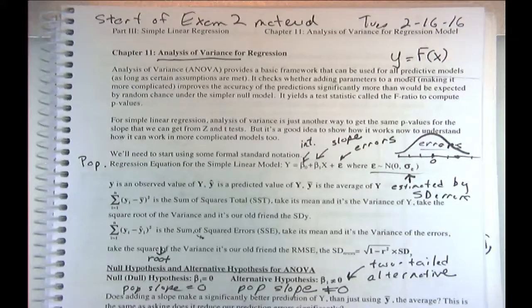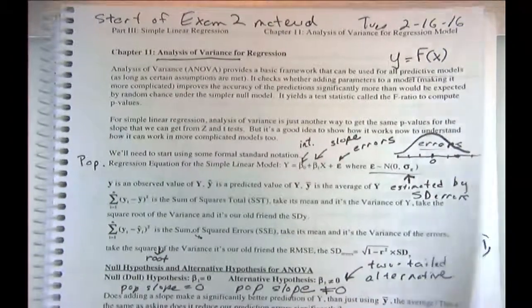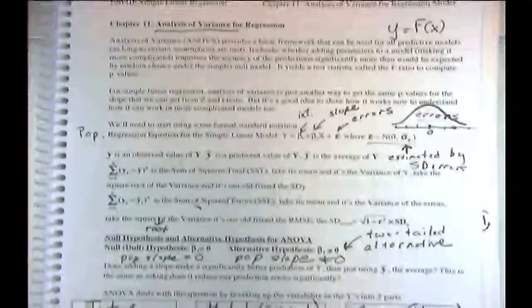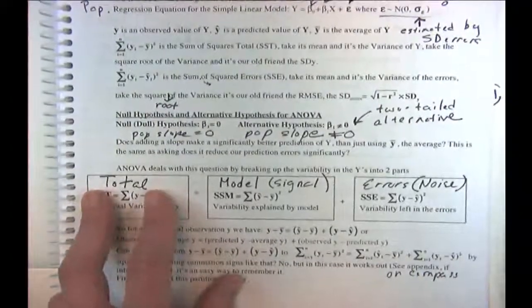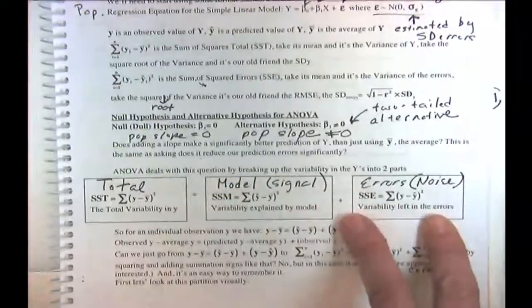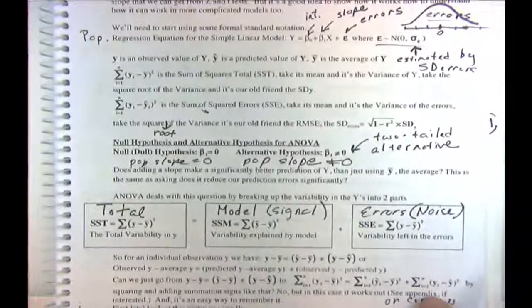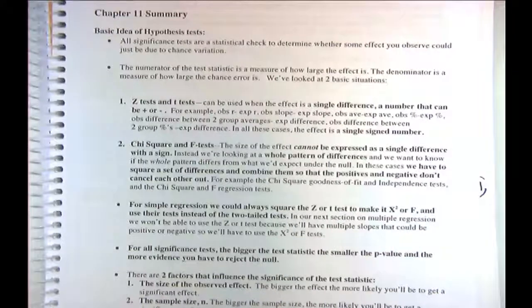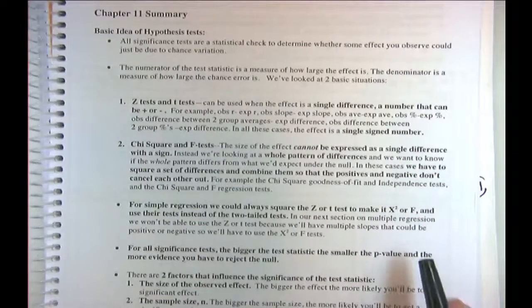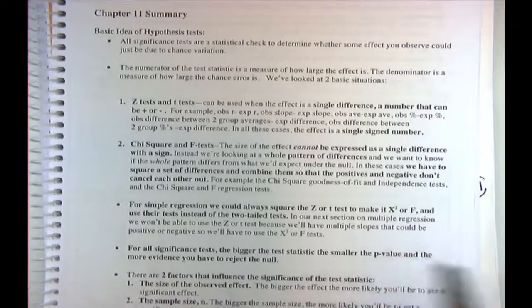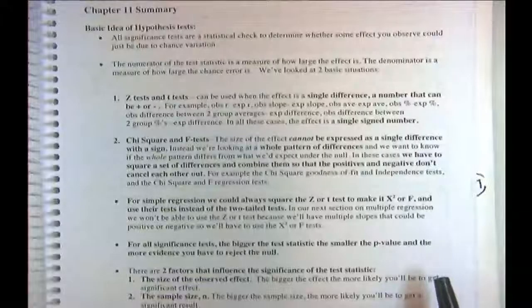We have a lot to do today. We are going to finish up chapter 11, talking about another way to do regression estimates and significance tests using analysis of variance — basically breaking down the variability of the y's into the part due to the model and the part left in the errors. We have one more example left to do. Homework due Monday will be two or three problems, half on chapter 11 and half on chapter 12, so we're going to cover both today.